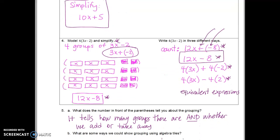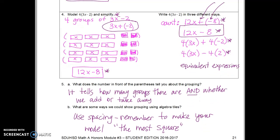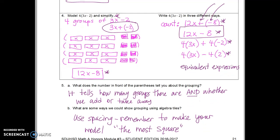Number five, the number in front of the parentheses tells you how many groups there are and whether we add or take away those groups. So far, all we've done is add, the subtraction is coming, the taking away is coming, and it is more challenging. When you use algebra tiles, use spacing. Remember to make your model the most square. And when you're drawing the models to show grouping, use parentheses. Use parentheses, and that is a requirement in this modeling.